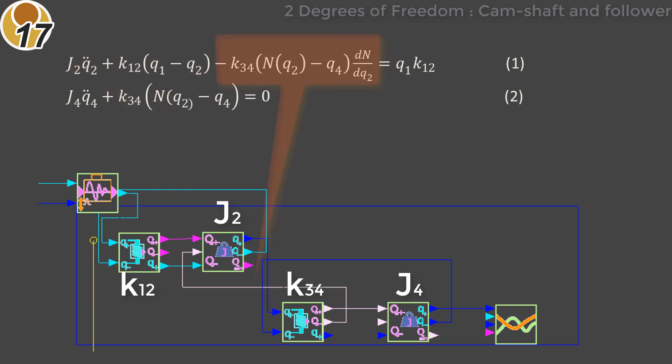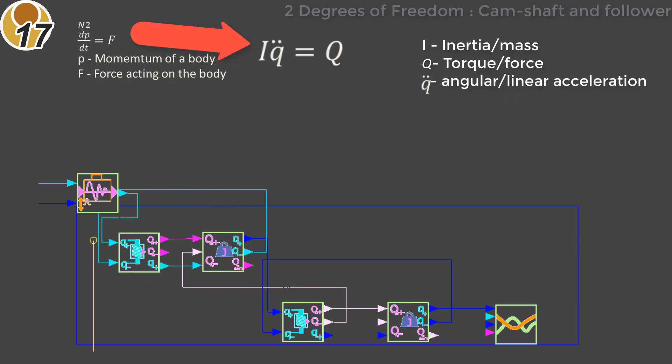Each of the terms in the two ordinary differential equations represents a generalized force. There is an approximate mapping between these terms and the function blocks and the data wires that connect them. The wires transmit either generalized torques or coordinates, depending on whether the function block is a spring or inertia, respectively.